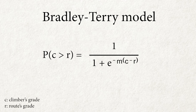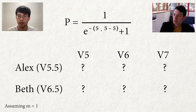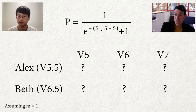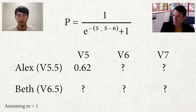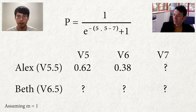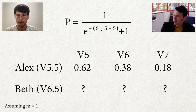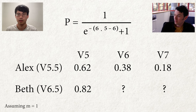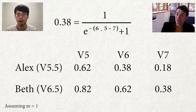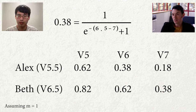Plugging in the numbers for Alex: she's expected to send the V5 with probability 0.62, the V6 flash with probability 0.38, and the V7 on flash with probability 0.18. Beth, on the other hand, has a probability of flashing the V5 at 0.82, V6 at 0.62, and V7 at 0.38. So if you already have the grades, this model tells you the probability of success.